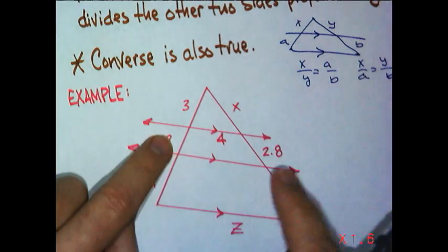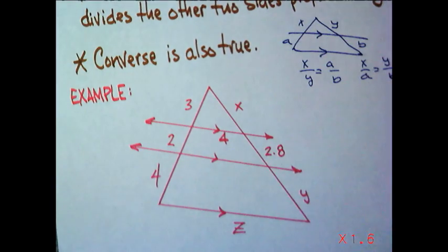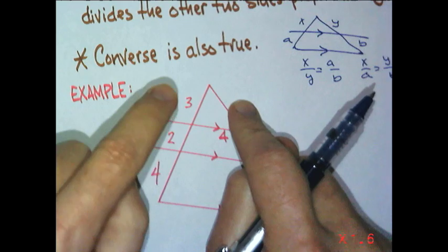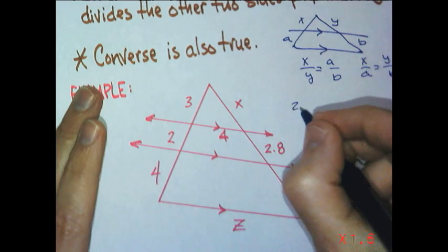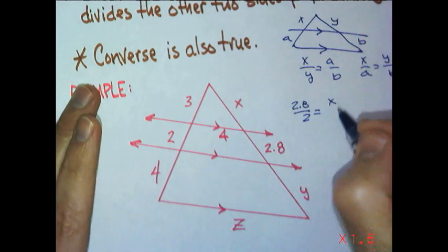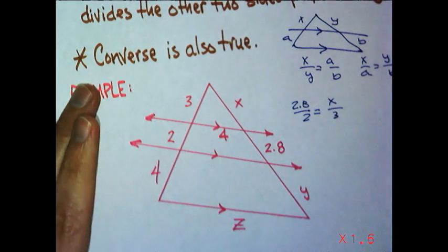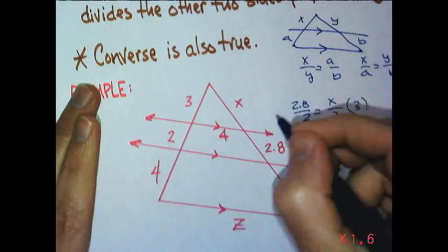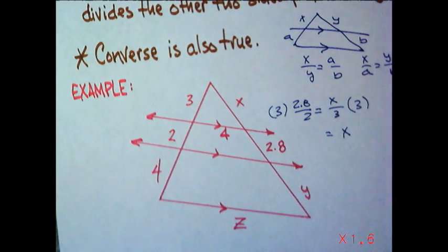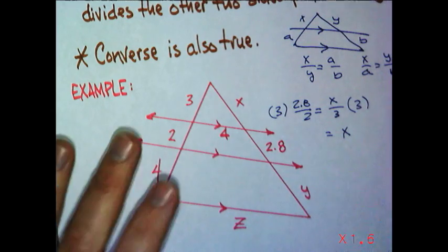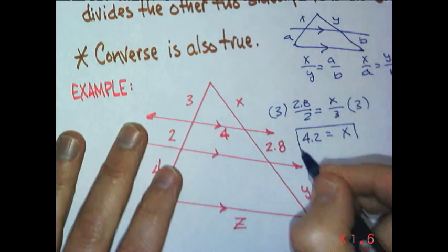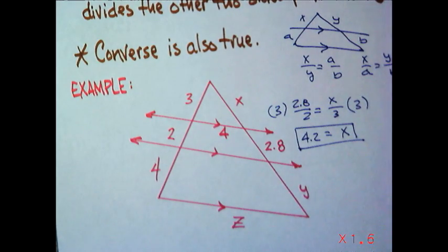I gave you this little section. So 2 compared to 2.8, or how about 2.8 compared to 2 would be X compared to 3. Multiply both sides by 3. X would be, get my calculator out, multiply it out. That turns out to be 4.2.